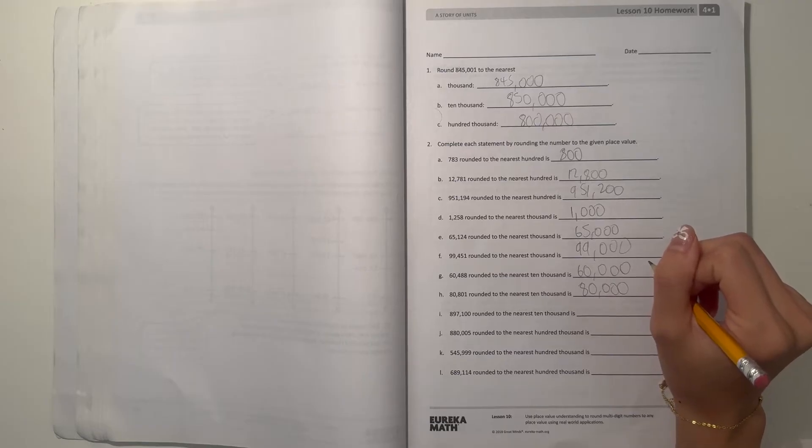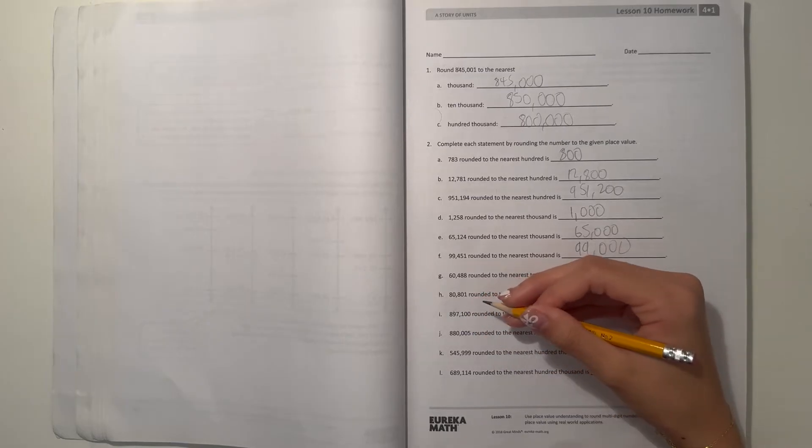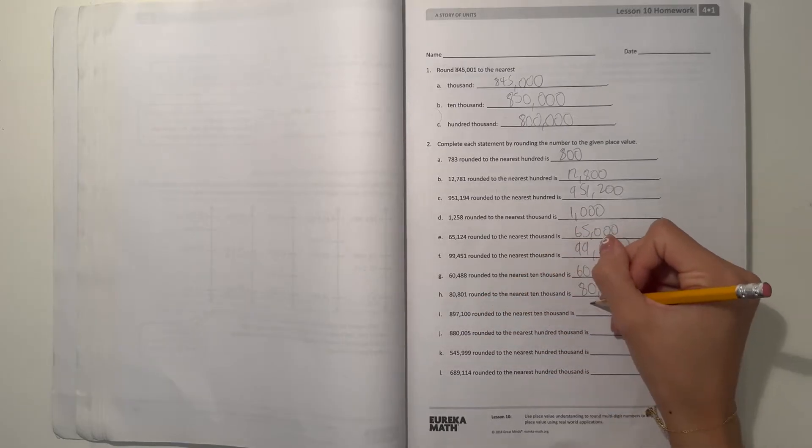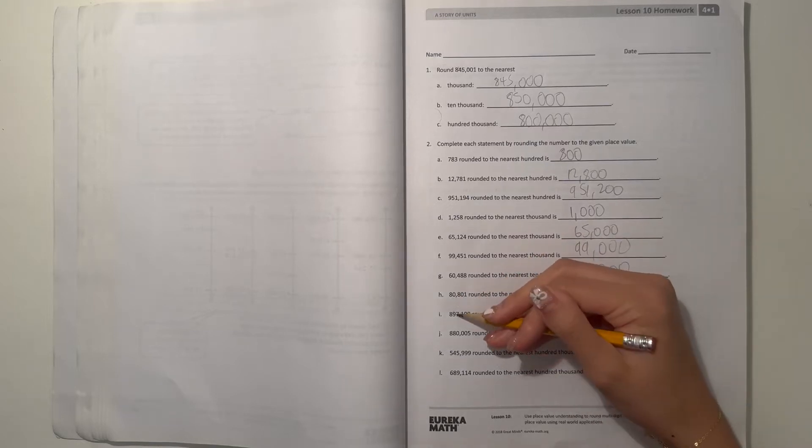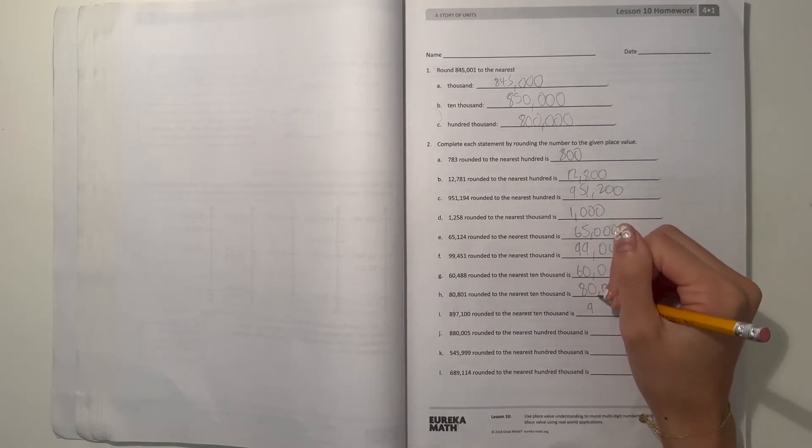880,807 to the nearest 10,000, which is this one, it would actually be 900,000. Because, okay we're rounding this one so we have to add one more but we can't so that'd be 900,000.